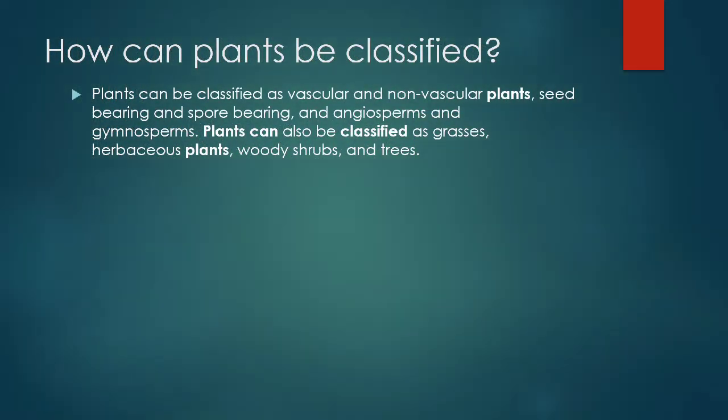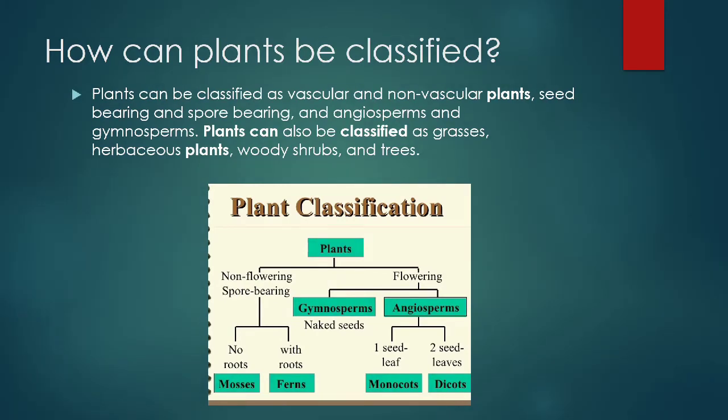How can plants be classified? Plants can be classified as vascular or non-vascular, seed-bearing or spore-bearing, angiosperms or gymnosperms. Plants can also be classified as grasses, herbaceous plants, woody shrubs, or trees.